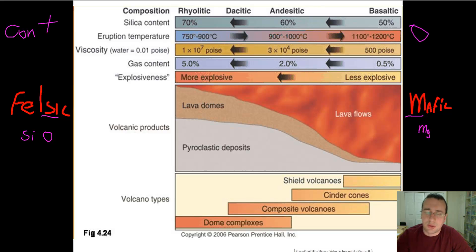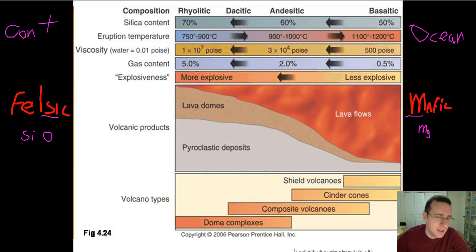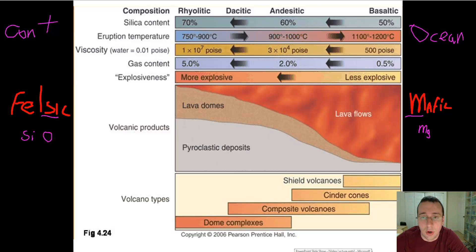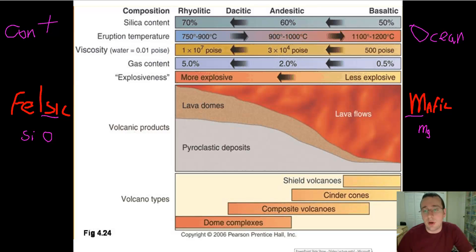On the left side, you have continent-versus-ocean volcanoes, volcanic hotspots associated with continents, and large igneous provinces, which are continental crust. On the right side, you have ocean volcanoes. The biggest difference between the two is going to be the composition.